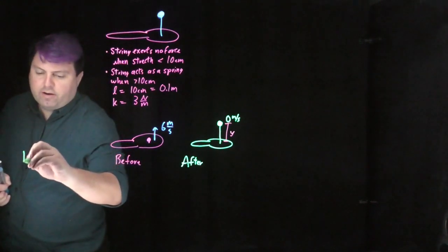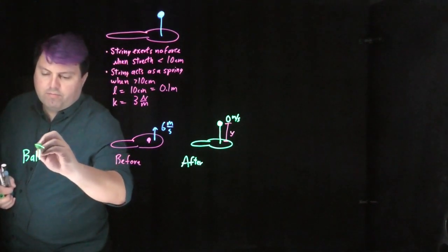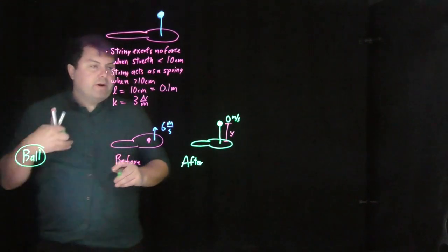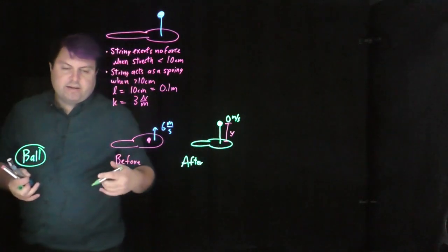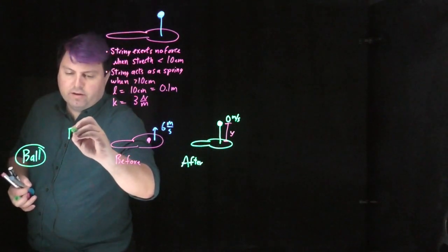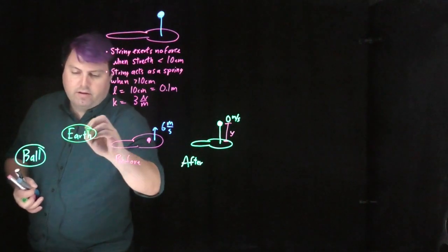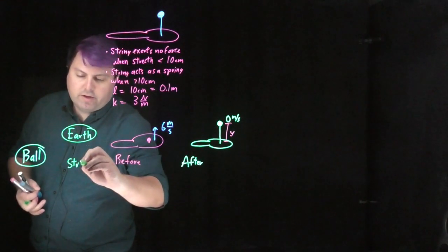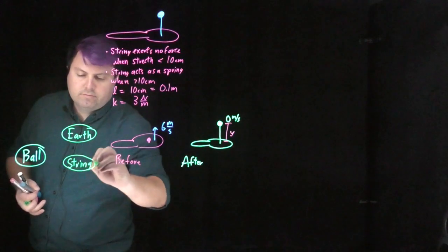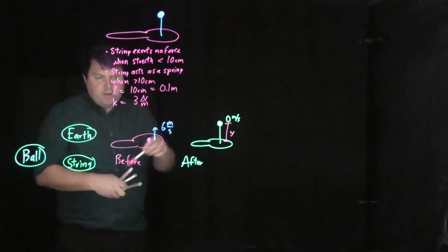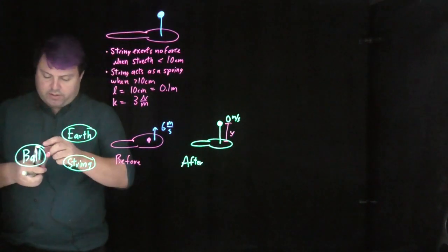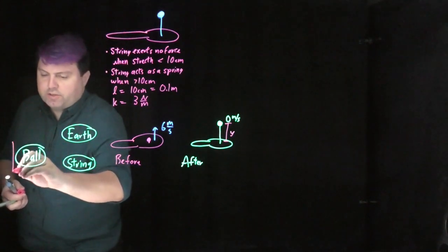We have our ball, and we want to think of what other objects it is interacting with. It's interacting with the Earth, and it's interacting with the string. We want our system to be just the ball.